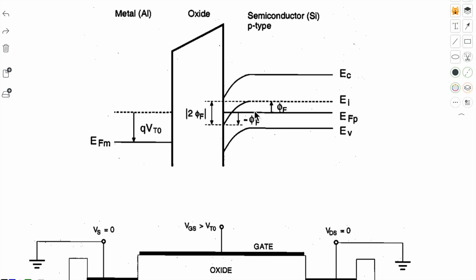This is the energy band diagram. In the inversion region, surface potential should be equal to minus 2ΦF and the metal Fermi level is also down below.